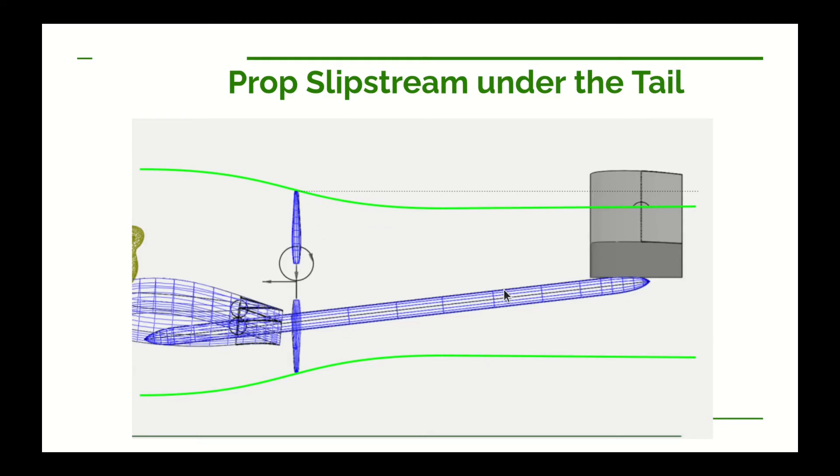The air behind the prop is going to be moving faster so it has lower pressure. Well the pressure outside that area is going to be higher. Well when you get a higher pressure here and lower pressure here, it's going to squeeze it in a little bit, and that's what you see from these green lines here.